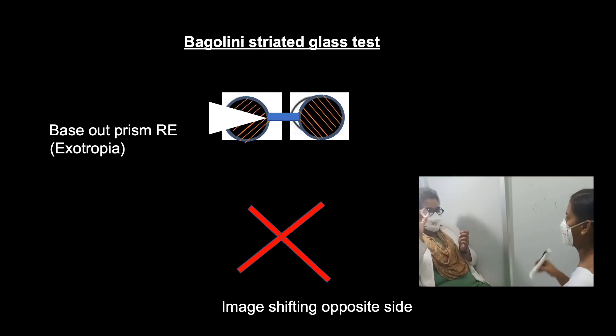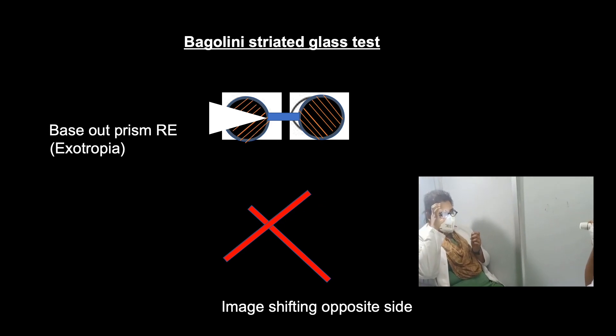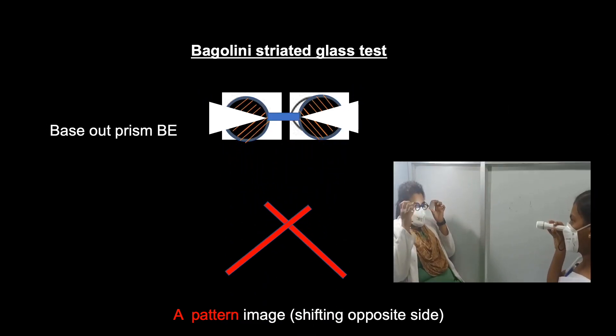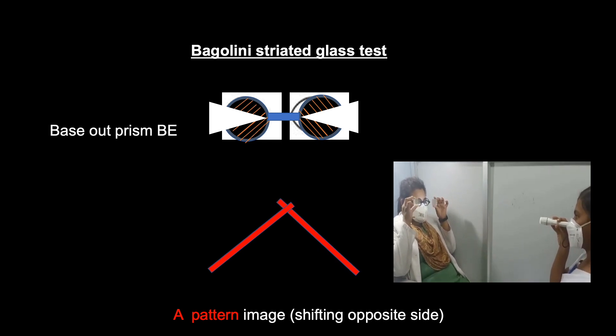Similarly, base out prism is placed in front of the right eye, we can see the image shifted to the opposite side. And when the base out prism is placed in both eyes, both images are shifted to the opposite side, we can clearly see a Lambda pattern.